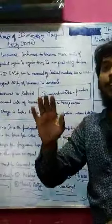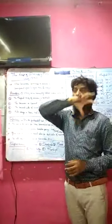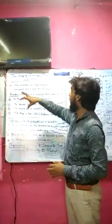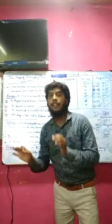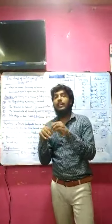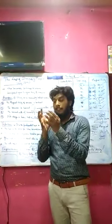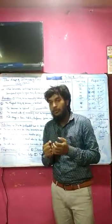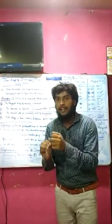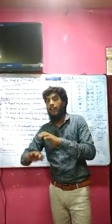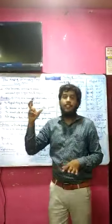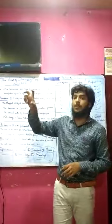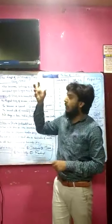It is Alfred Marshall, the father of economics, who came into play and overtook this concept of marginal utility in a comprehensive way. He says that marginal utility, when you consume, it becomes nil, it becomes zero, it becomes negative, and it becomes almost minus.